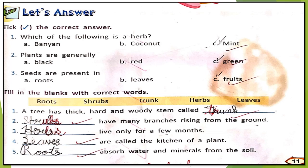Number three: blanks live only for a few months — that is herbs (H-E-R-B-S), written with a capital H. Number four: blanks are called the kitchen of a plant — that is leaves (L-E-A-V-E-S), capital L. Note: if the blank uses 'is', write leaf (singular); if it uses 'are', write leaves (plural).